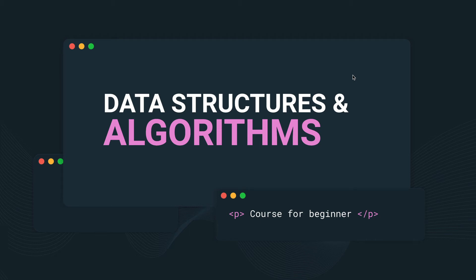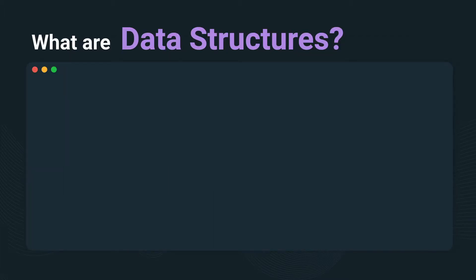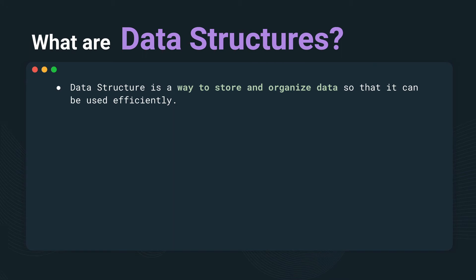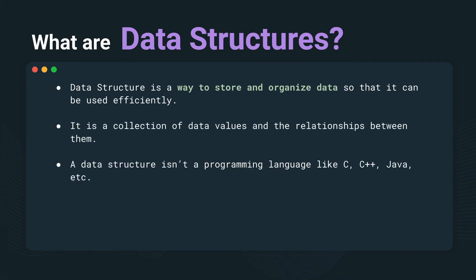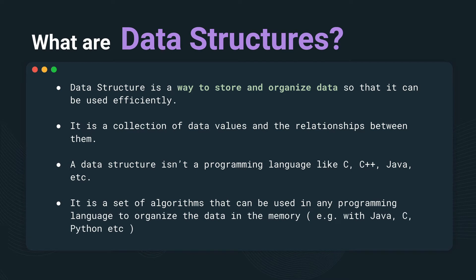Hello everyone. We're going to talk about what are data structures and algorithms, and this course is for beginners. First of all, let's talk about what are data structures. Data structures are a way to store and organize data so that it can be used efficiently. A data structure isn't a programming language like C, C++, Java, etc. — it's actually a set of algorithms.